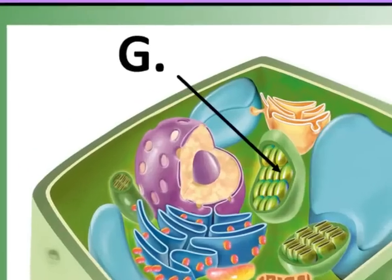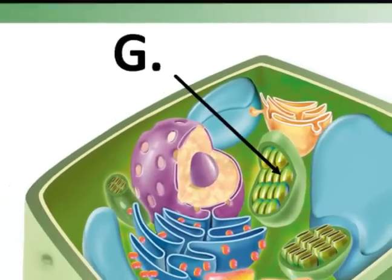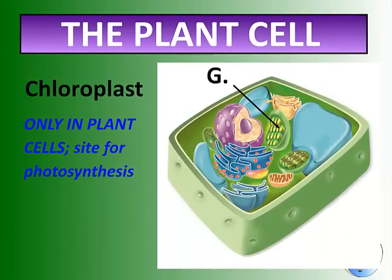We also have something called a chloroplast, and again it's only found in plant cells. This is the site for photosynthesis — the actual site inside the cell where photosynthesis takes place. Light energy is converted to usable, storable energy for the plant.